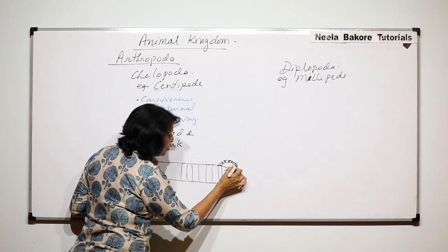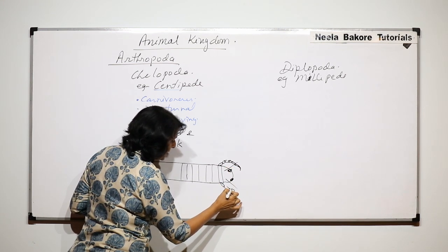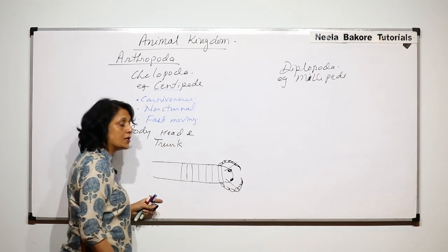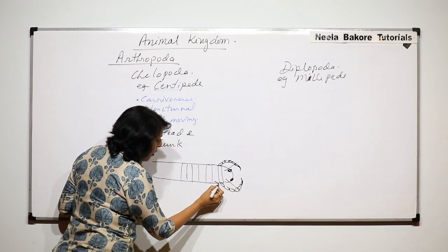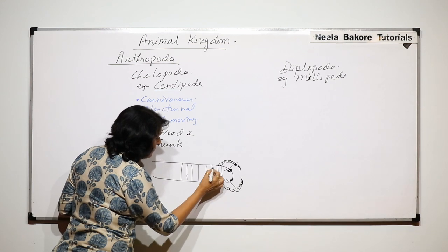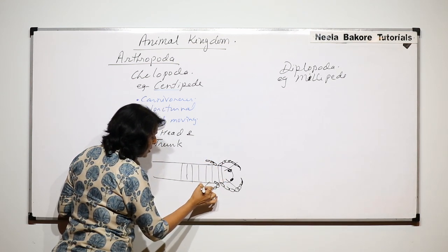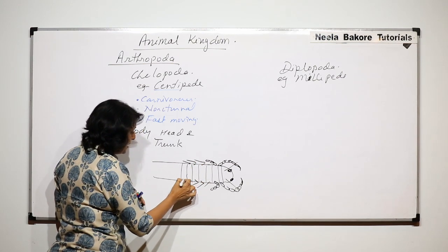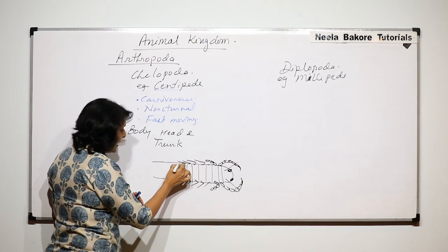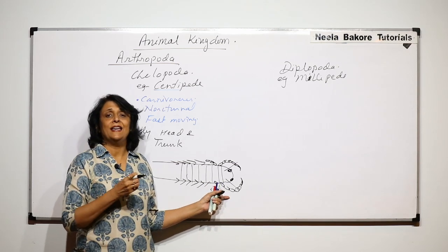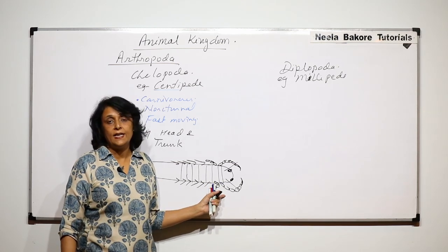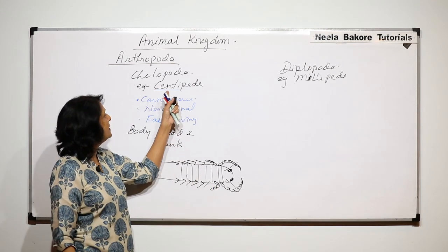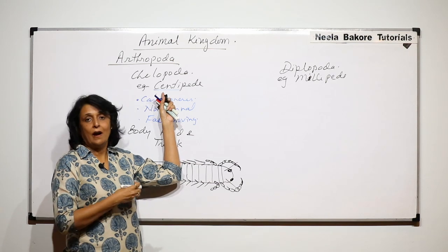Every segment has paired jointed appendages, but the first segment has jointed appendages which change into a claw-like structure. So the first pair changes into claws, and then all other segments have paired structures which are the walking legs. Normally there are about 40 to 50 pairs of legs.